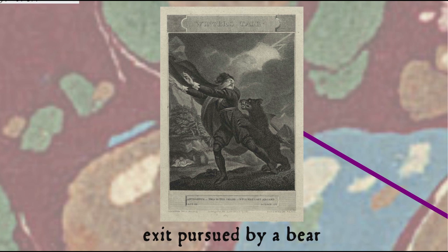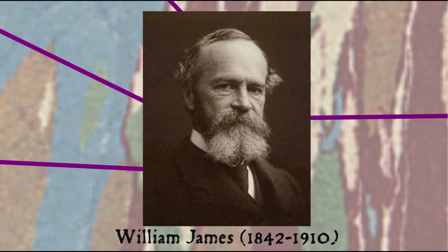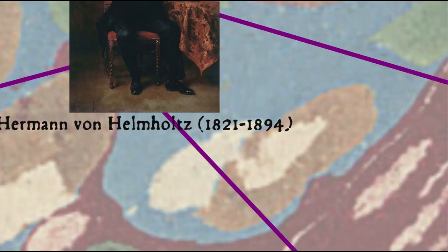Once your heart slows down, you can be like Wordsworth — recollect that emotion in tranquility and write a poem about it. As you might imagine, this could have important implications for any theory of aesthetics. James had been taught by German physician and physicist Hermann von Helmholtz, who had also worked on perception, devising theories of vision, colour vision, and the visual perception of space.